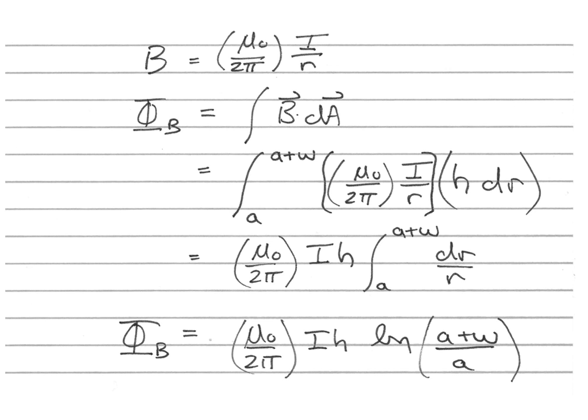The other difference in the problem that we'll do in today's packet is that the current in the wire is not constant. The current is actually going to be changing. And that changing current, of course, is going to affect time-dependent flux. So there's a hint in the packet about how to handle that. And it's really not much more difficult than what we just did.